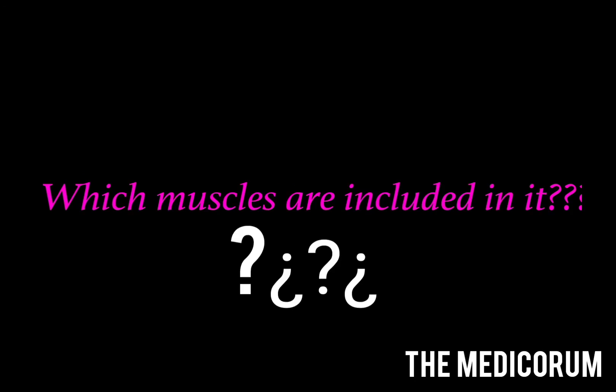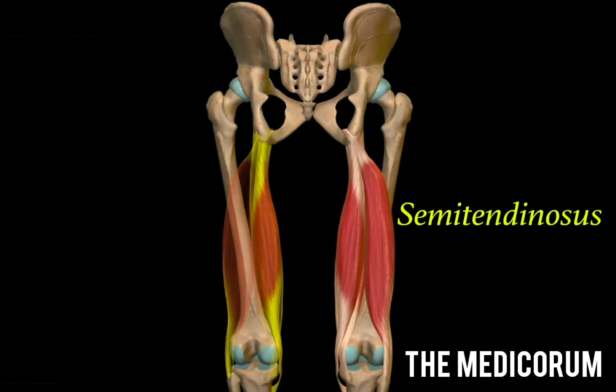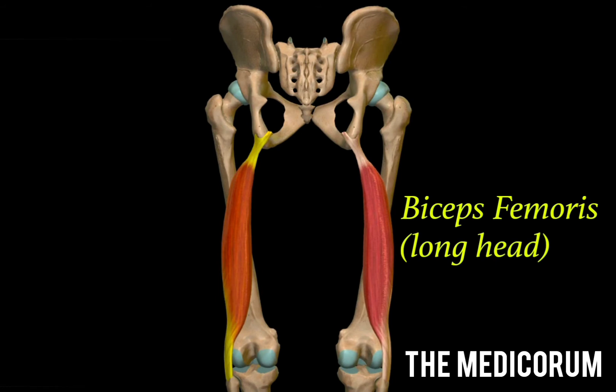You may have the question: which muscles are included in it? There are total four muscles included in the hamstring category. The first muscle is the semitendinosus. The second one is the semimembranosus. The long head of biceps femoris is the third muscle.